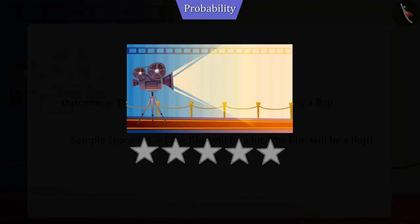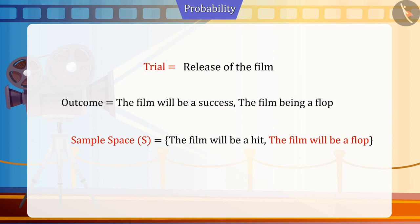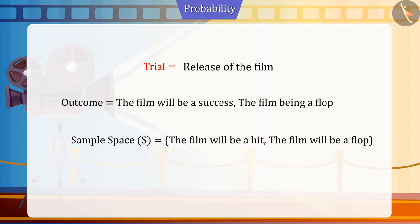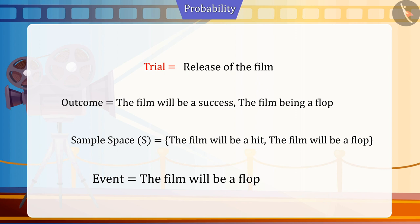In the previous video, we had seen more chances of the film not working at the time of its release, which is an element of sample space. The film being a flop is an event. Hence, we can say that every element of sample space is an event.